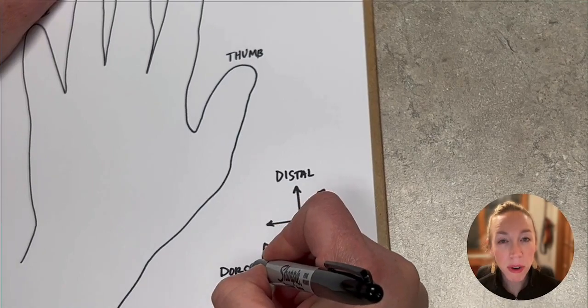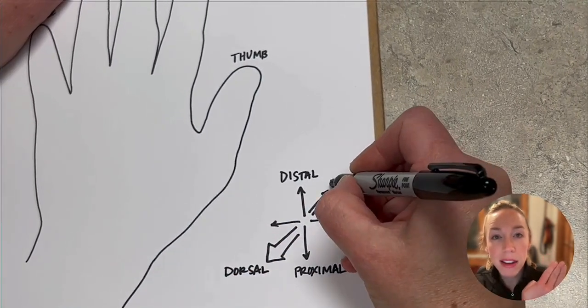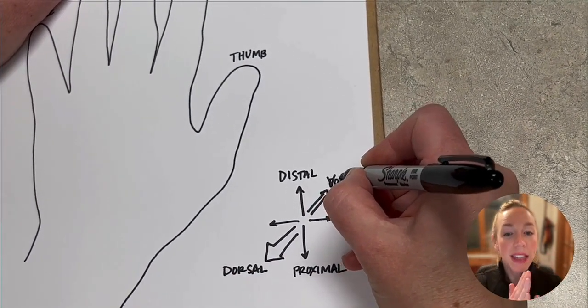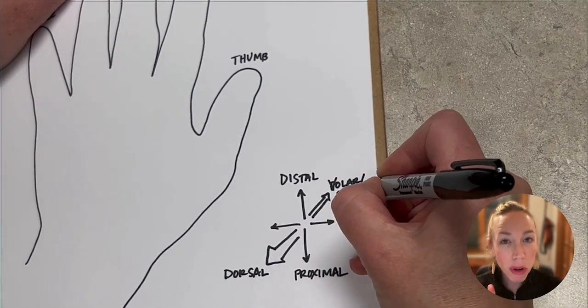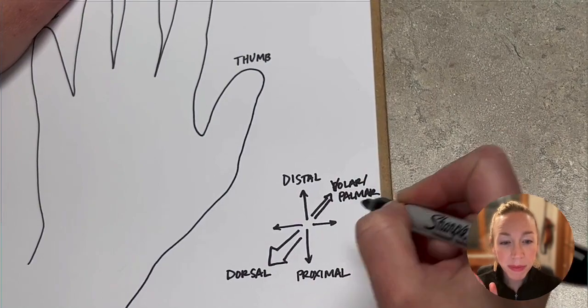The southwest arrow refers to the top of the hand or dorsal. And the northeast arrow refers to this side of our hand, right? Volar or palmar.